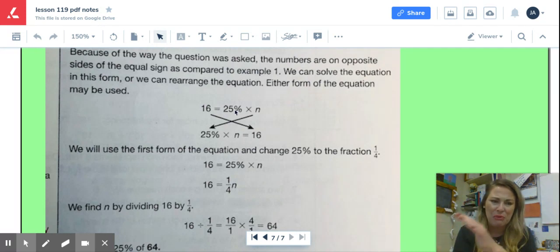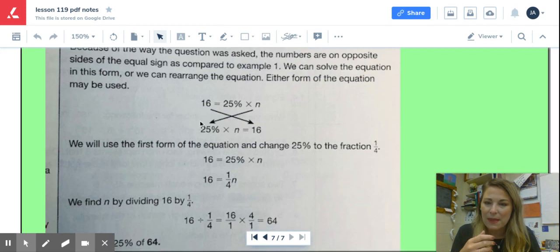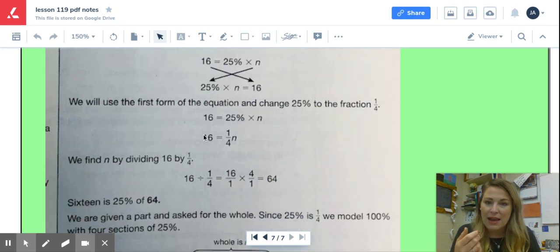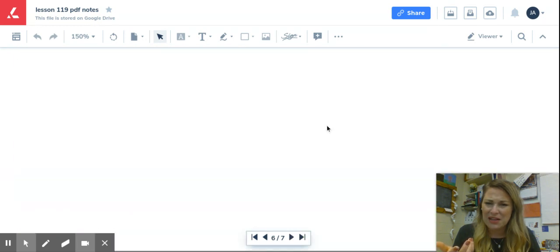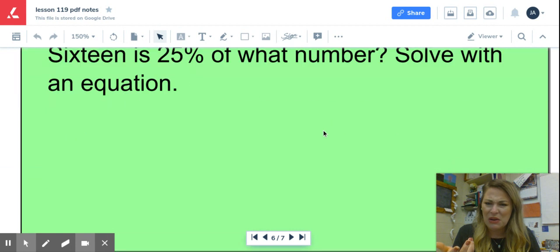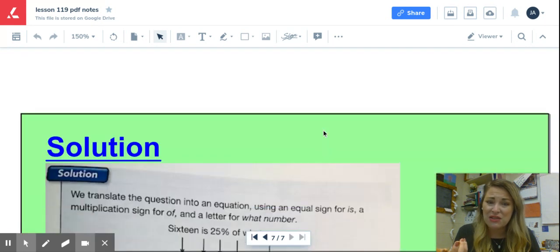It's just a viewing thing. They've just flipped this linear equation around so that the 25 times n is first and the 16 is second. So it doesn't matter. It's not a big deal. So this is just a viewing thing. Now, they've chosen to use a fraction in this case. Let me just double check. No, you don't need to use a fraction. They just did.